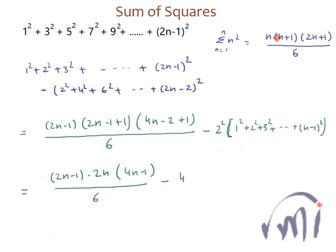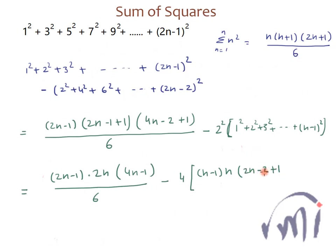We apply the formula again, substituting n−1 in place of n. So this becomes 4 times (n−1) multiplied by (n−1+1), which is n, multiplied by 2(n−1)+1, which is 2n−1, everything divided by 6.